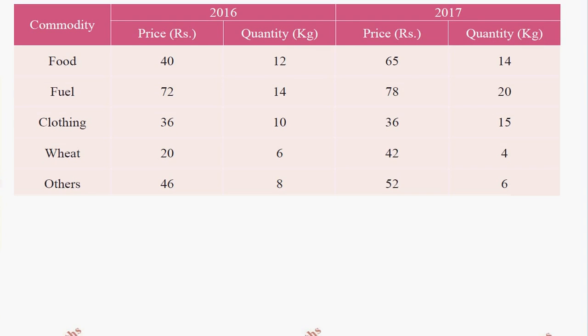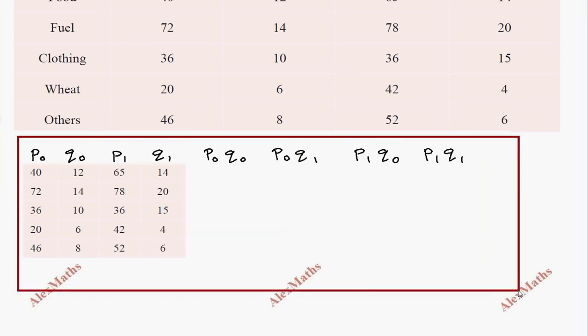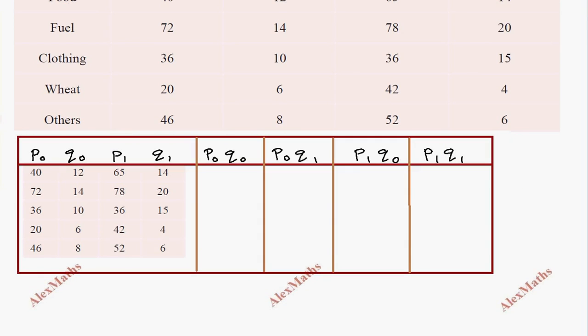The table shows price and quantity data. For 2016, price is P₀ and quantity is Q₀. For 2017, price is P₁ and quantity is Q₁. We need four columns: P₀Q₀, P₀Q₁, P₁Q₀, and P₁Q₁. Fill in the table and then calculate the summation for each column.